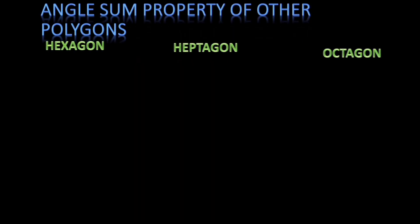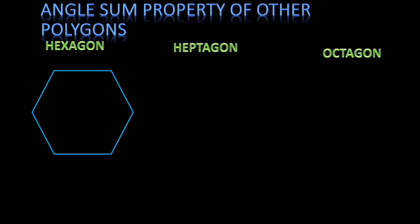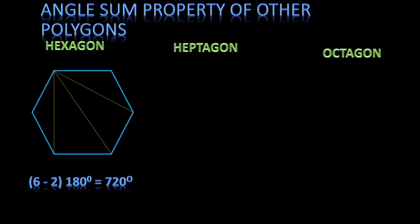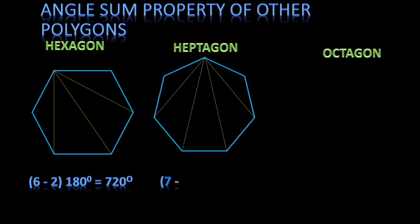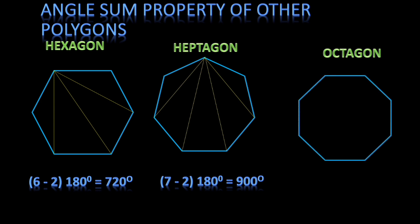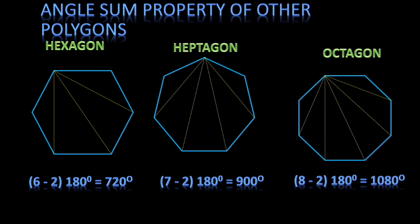For a hexagon, which is a six-sided polygon, four triangles can be formed. So the angle sum is (6 − 2) × 180 = 720 degrees. For a heptagon (seven sides), it is (7 − 2) × 180 = 5 × 180 = 900 degrees. For an octagon (eight sides), (8 − 2) × 180 = 6 × 180 = 1080 degrees. In this way we can find the interior angle sum of any polygon.